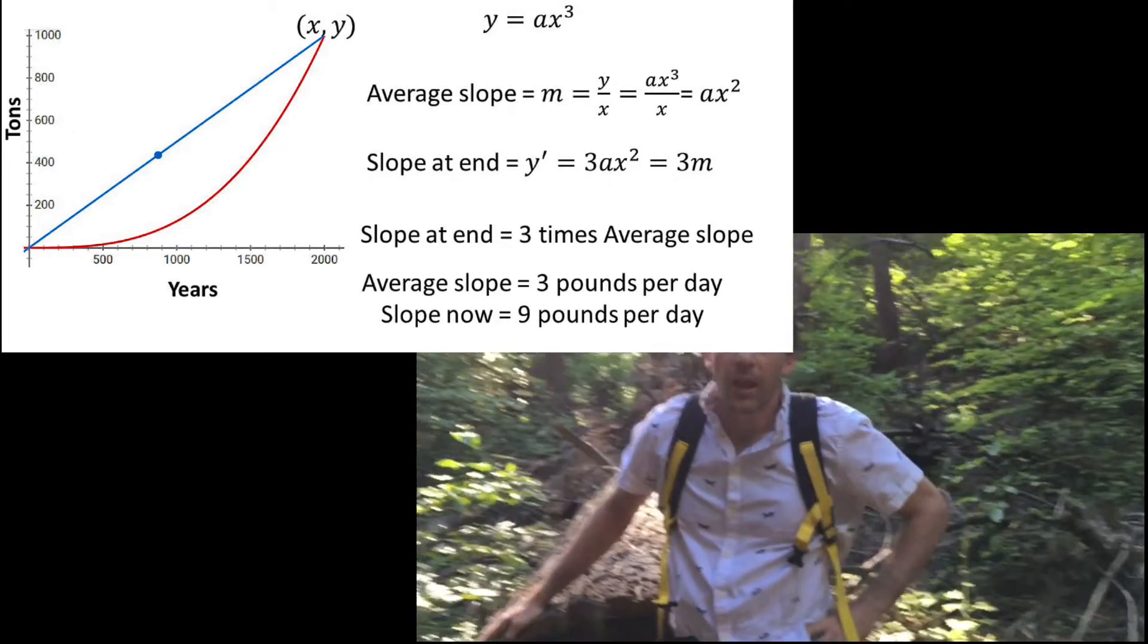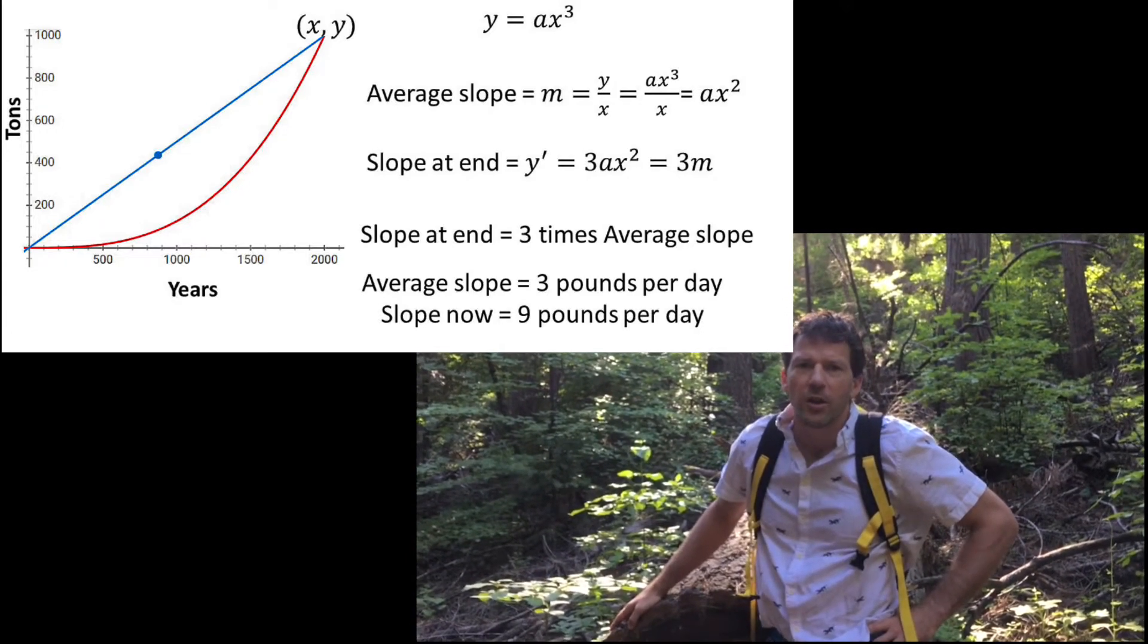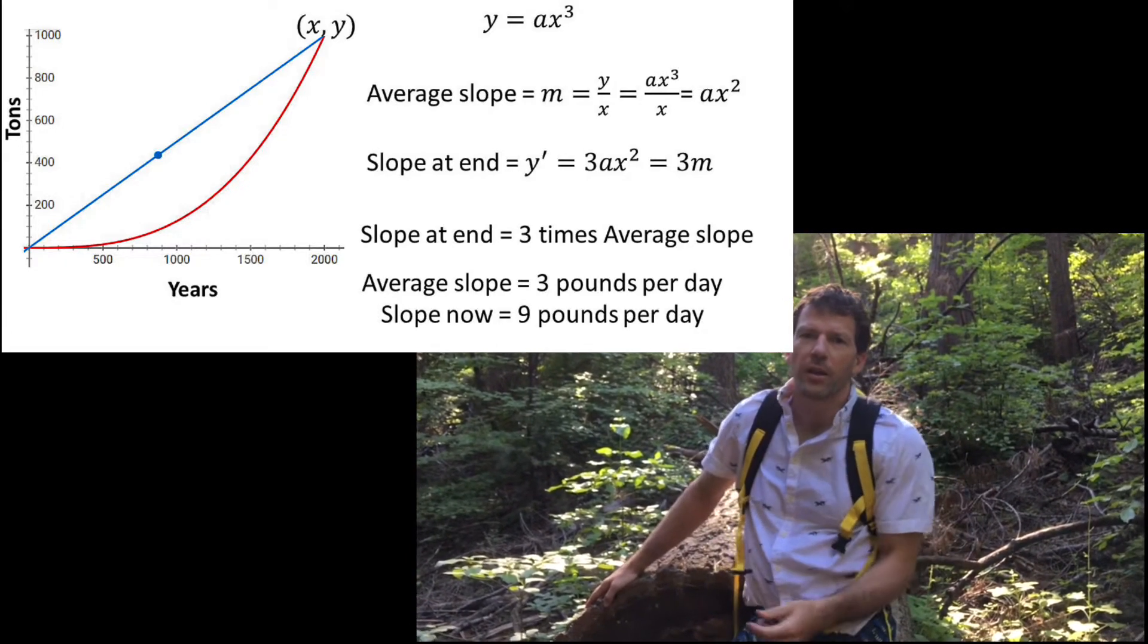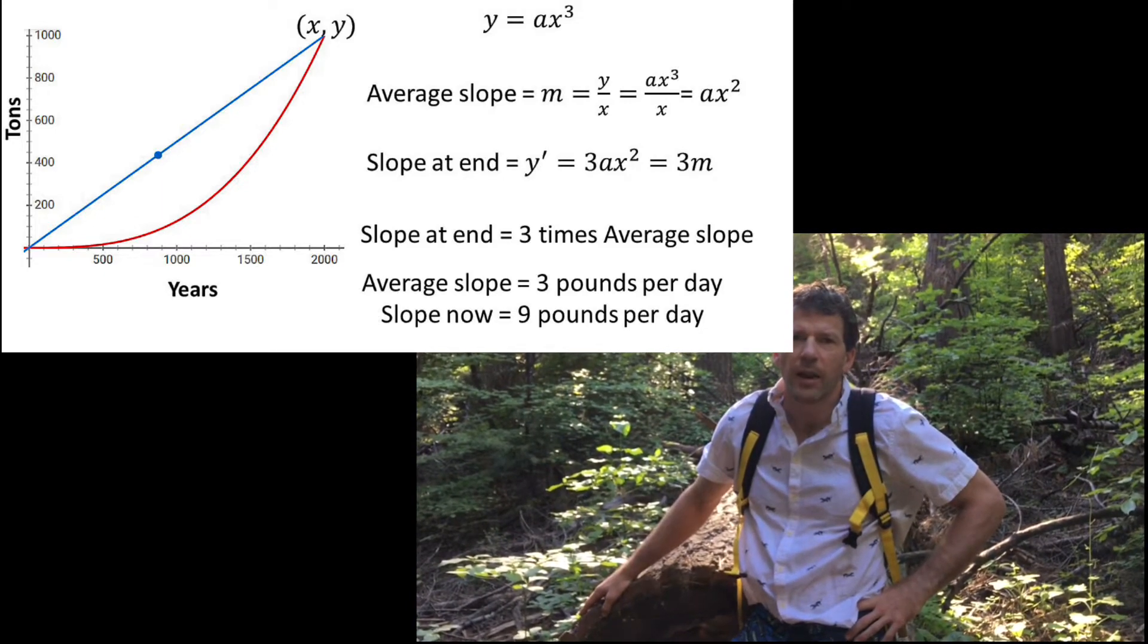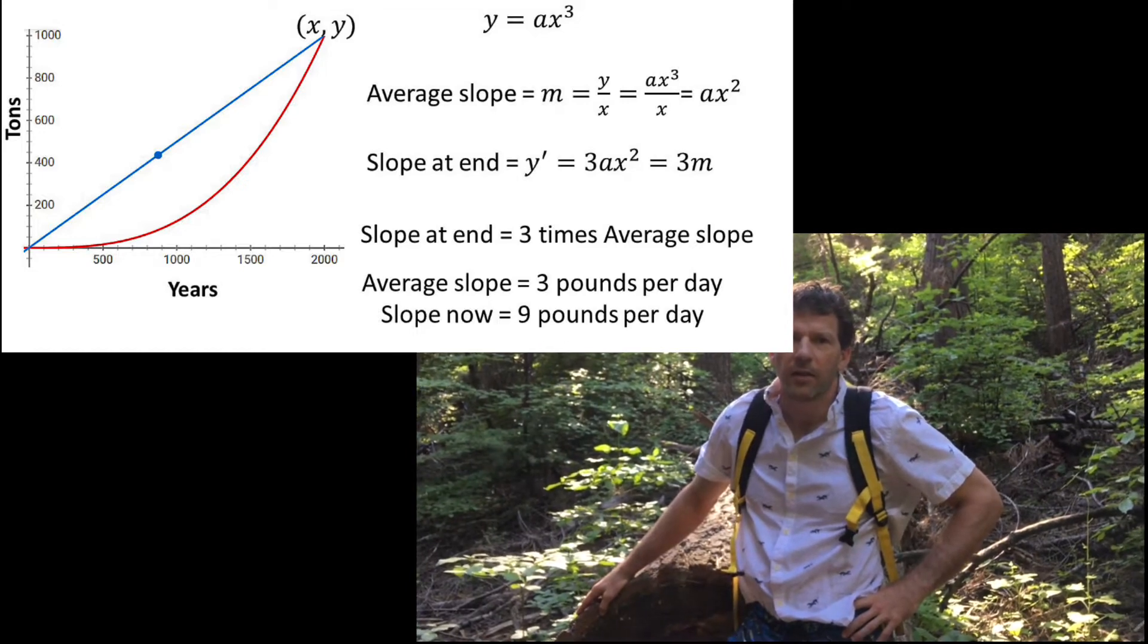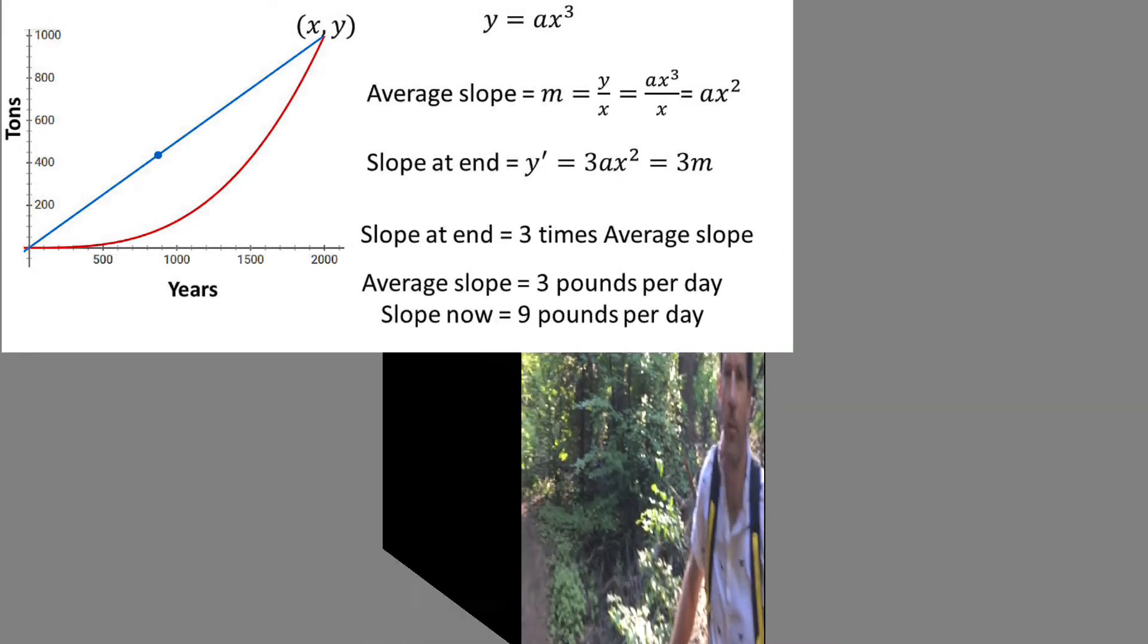So for a cubic function, you just multiply the average by three and you get the instantaneous growth rate for the current year. So it's about nine pounds per day that that tree was growing.